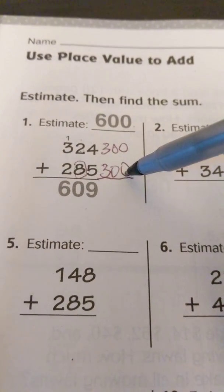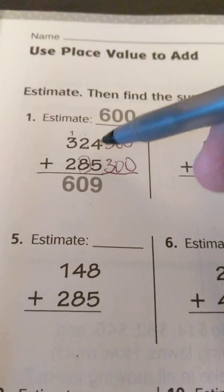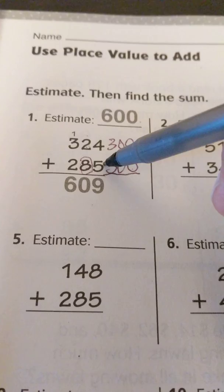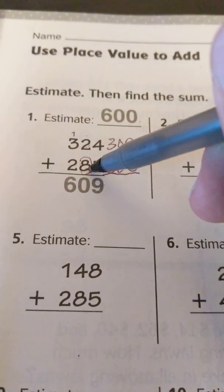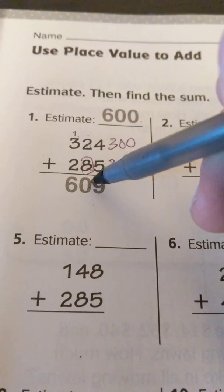If you add 300 plus 300 you know that answer is 600. When the problem is solved, 4 plus 5 is 9, 2 plus 8 is 10, they regrouped this 10 to the hundreds.